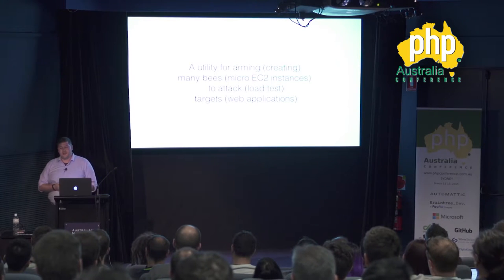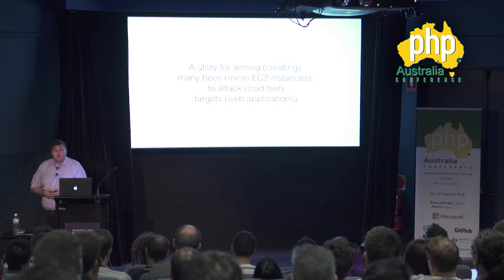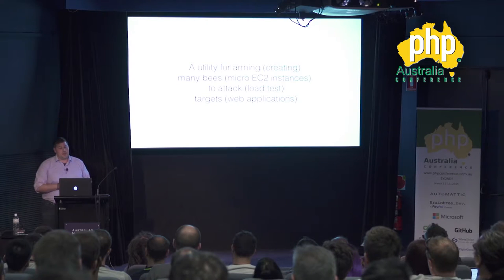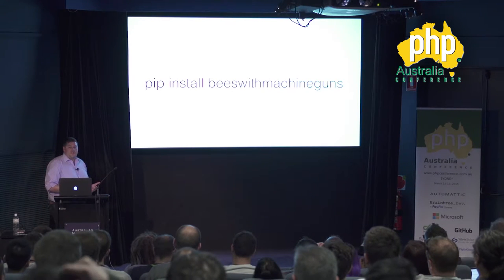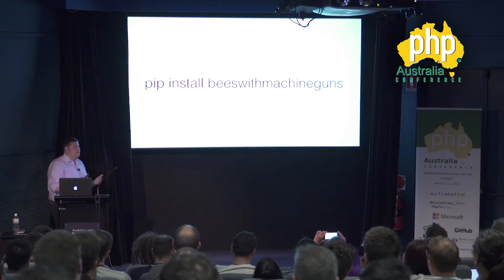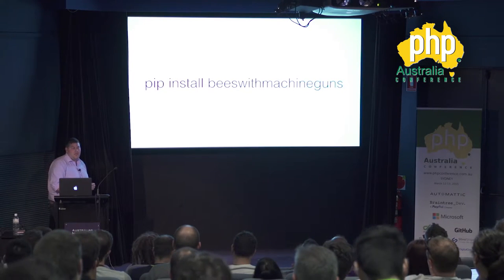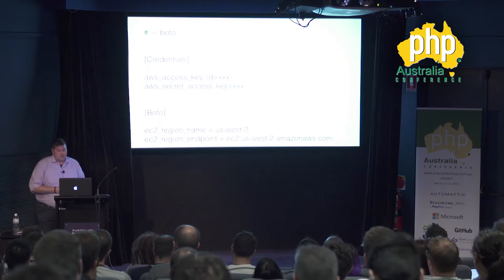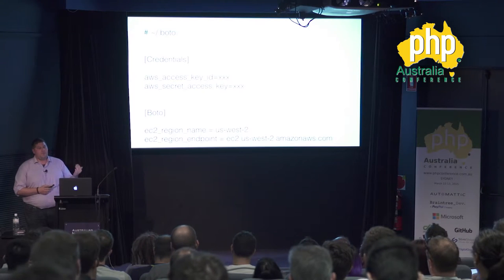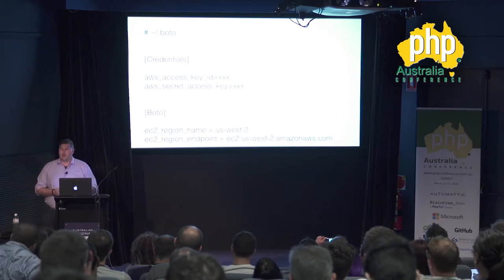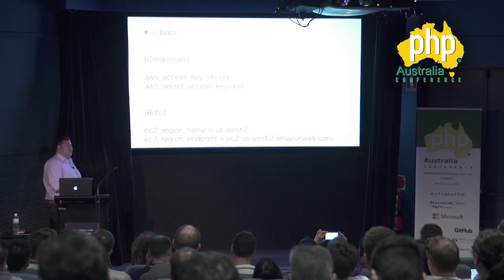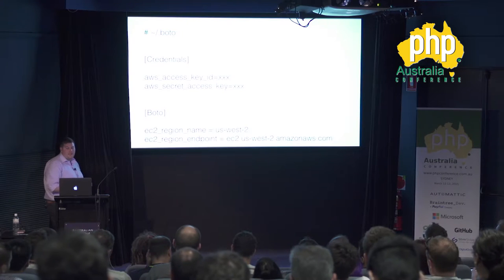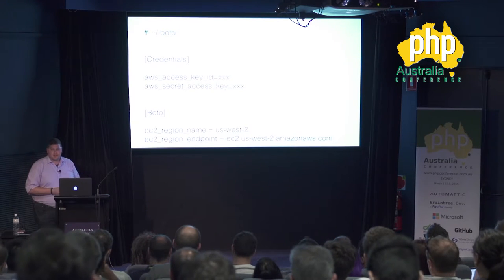Bees with Machine Guns is written in Python. If you're not familiar with AWS, you can get a free account for up to a year. Install it simply with 'pip install beeswithmachineguns'. It relies on a Python library called Boto for AWS access. Just sign up for an Amazon account, configure your access key and secret in the configuration file, and specify the region — for example, Oregon, which is AWS US West 2.